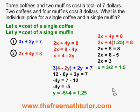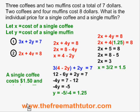It's time to give the final answer to my problem. Since x is the cost of a single coffee and is equal to 1.5, a single coffee costs $1.50. Y is equal to 1.25, so a single muffin costs $1.25. I have to remember to give my final answer with units of measure if I want to get full marks for this problem.